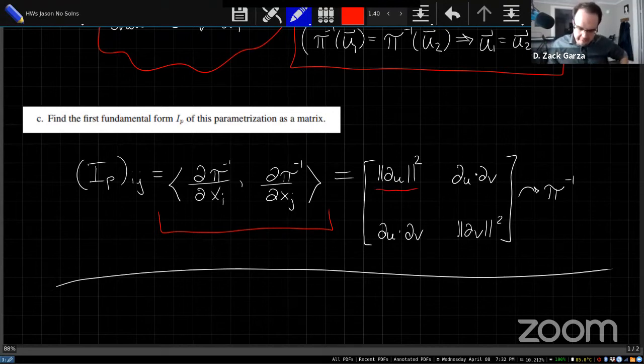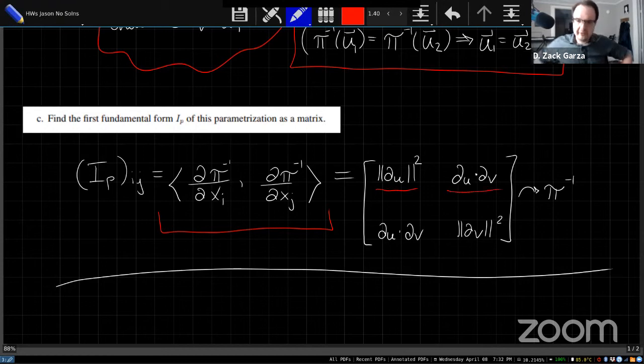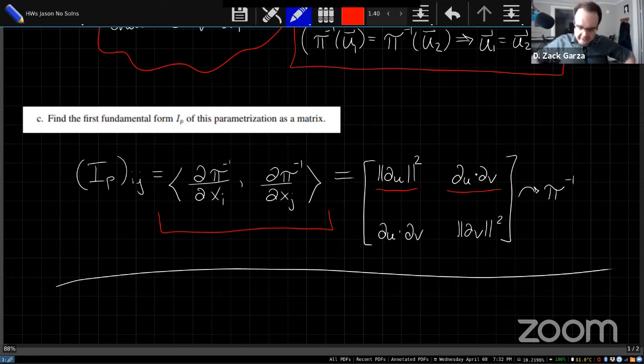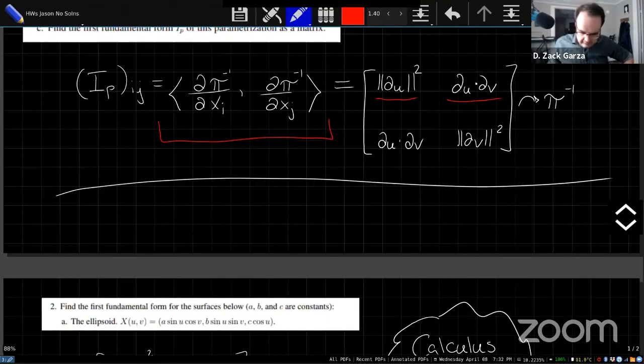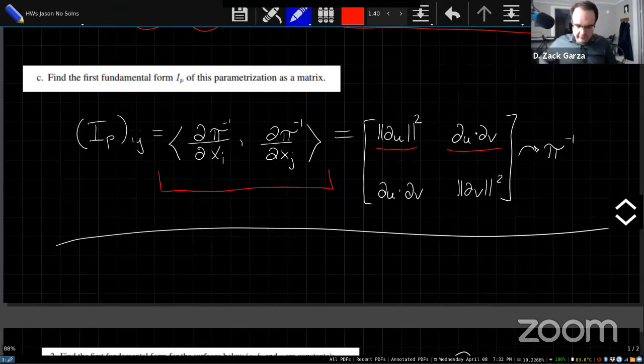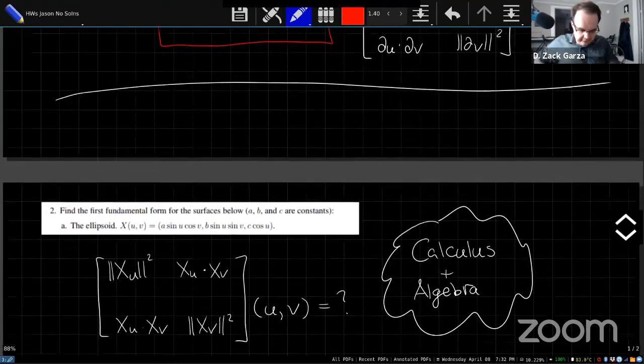So like the top left corner, we're taking partial of u against partial of u, the inner product of that. Top right corner, we're taking partial of u against partial of v, and so on. And you can compute this as just one big, it'll be a matrix of functions. And there should be some nice simplification at the end of this. And I think once you have this Part C, where you've computed the first fundamental form of this particular matrix, most of Part 2, or sorry, most of Question 2 will follow almost analogously, I think.